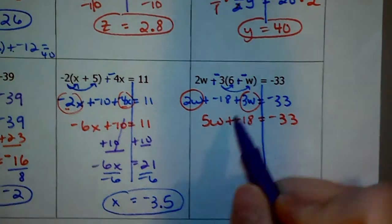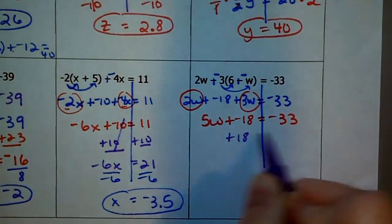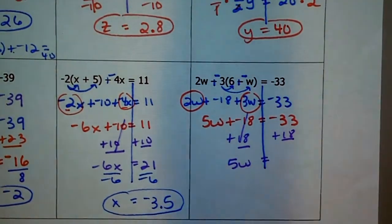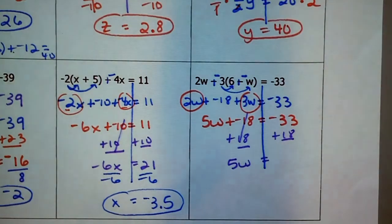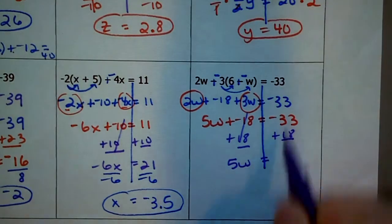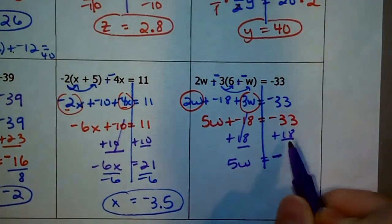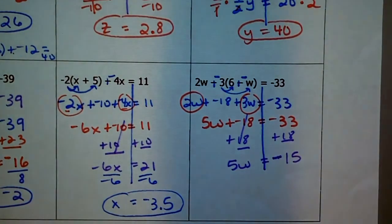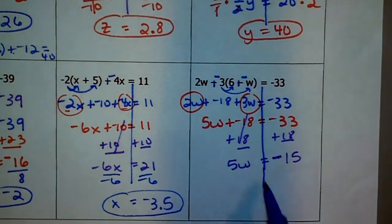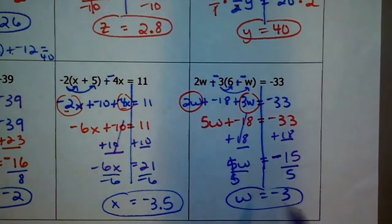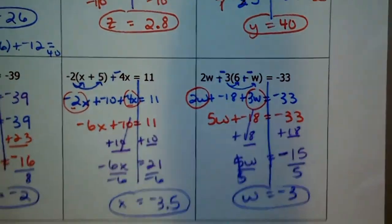All right, time to get rid of this -18 that's being added. I'm going to add a positive 18. So 5w is left because those cancel out. And remember, when you are adding unlike signs, subtract the digits and take the sign of the greater digit. So I know my answer is going to be negative because 33 is greater than 18. And 33 - 18, yes, it is 15. Okay, let's get rid of this 5. It's being multiplied. So we are going to divide by it. And we get w = -15 divided by 5 is -3. All set. See you tomorrow.